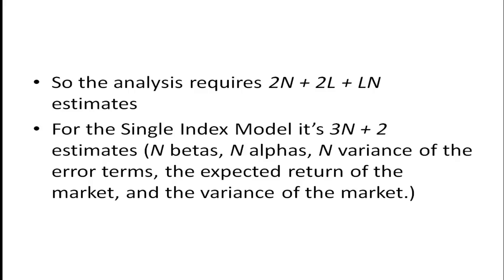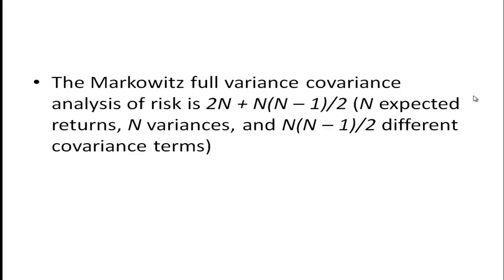It turns out that if we use this multi-index model, the analysis requires 2n plus 2L plus L times n estimates, where n is the number of securities and L is the number of indexes. For the single index model it's 3n plus 2 — we need n betas, n alphas, n variances of the error terms, plus the expected return of the market and the variance of the market. For the full Markowitz full variance-covariance analysis, we need 2n plus n times (n minus 1) divided by 2: n expected returns, n variances, and n times (n minus 1) divided by 2 different covariance terms.